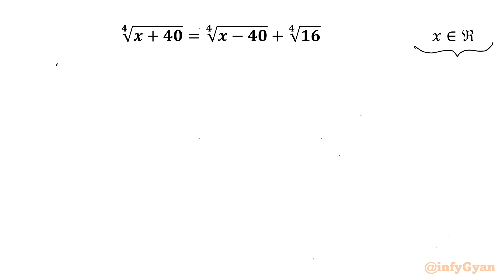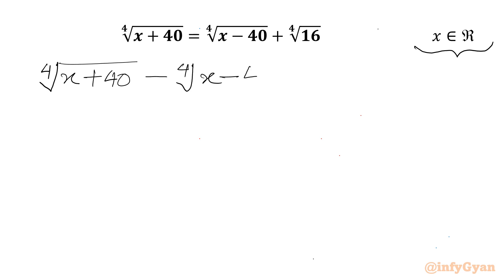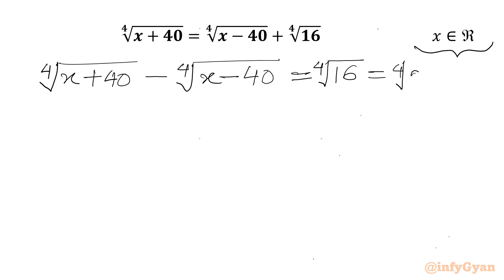Let's get started by writing our equation: 4th root of (x plus 40) minus 4th root of (x minus 40) equals 4th root of 16. Now 16 can be written as 2 to the power 4, so the 4th root and power 4 cancel out, and the right-hand side becomes 2.